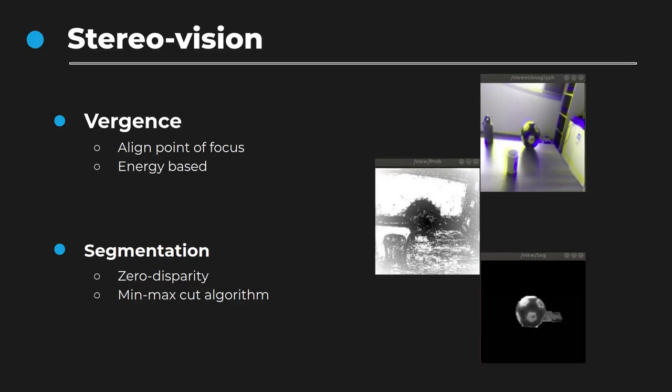The second step in our architecture is the vergence mechanism, which takes the point of focus from the attention module and aligns the region centered on this point at the same location on both images, as you can see in the stereo image on the top. We then compute a zero disparity map, which is used to segment the object from the background, as you can see in the middle figure.